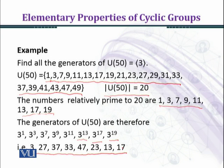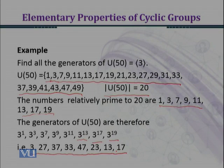Which are given as 3, 27, 37, 33, 47, 23, 13, and 17. So here you see that 3, 27, 37, 33, 47, 23, 13, and 17 can completely generate U(50), and the remaining elements up to U(50) cannot generate U(50) completely.